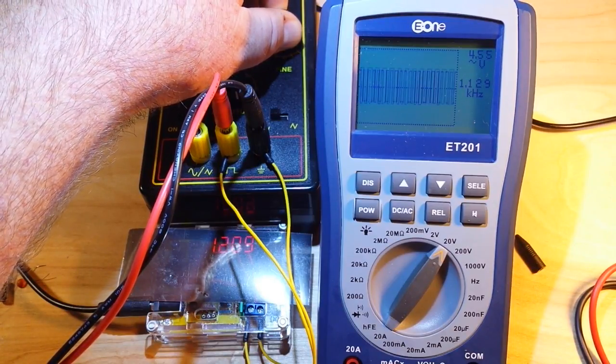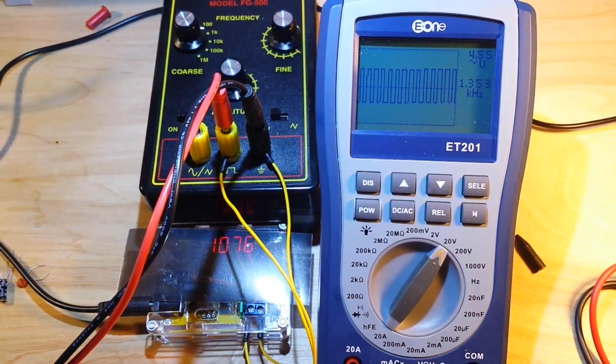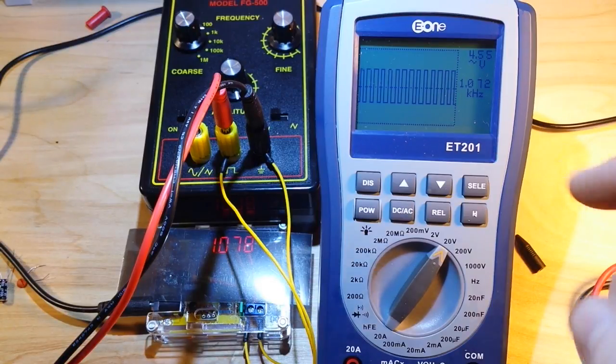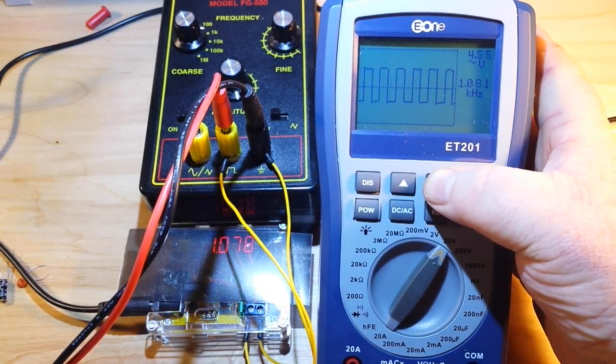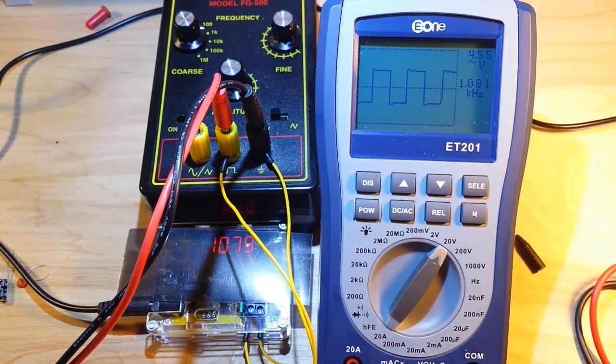Adjusting, adjusting. Bear with me here, this thing doesn't, you know, it's just got potentiometers for adjustment. Okay, so I'm seeing 1.077, 1.072. So, at 1kHz, we're looking pretty doggone good.